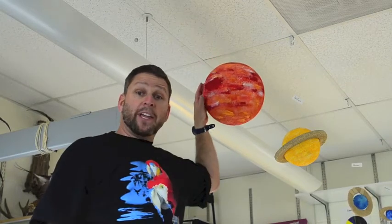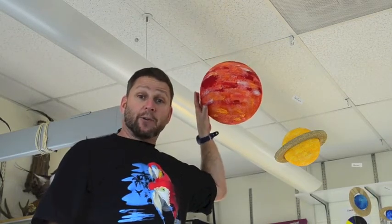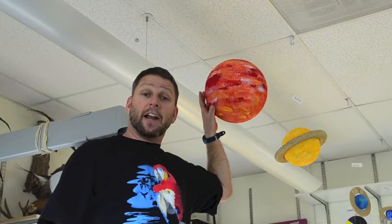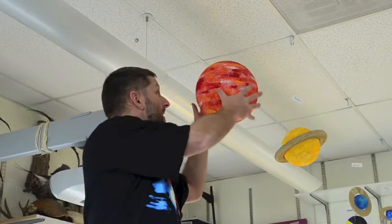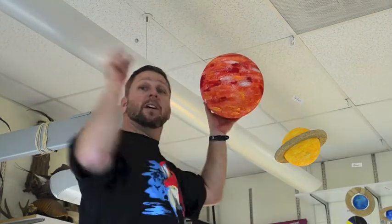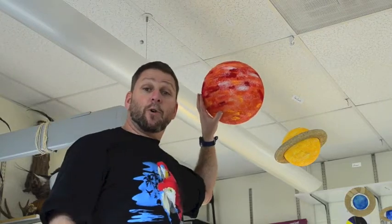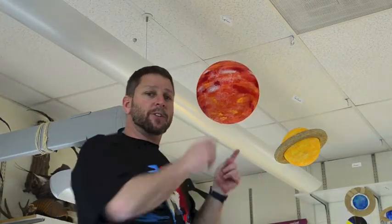The model planets on the ceiling are accurate in some ways and not accurate in others. These are accurate for relative size. Jupiter is very big, Ceres is very small. They are accurate for the colors of their outer layers. But they're not accurate for the materials, they're not accurate for what's inside. The insides of all of these are exactly the same.